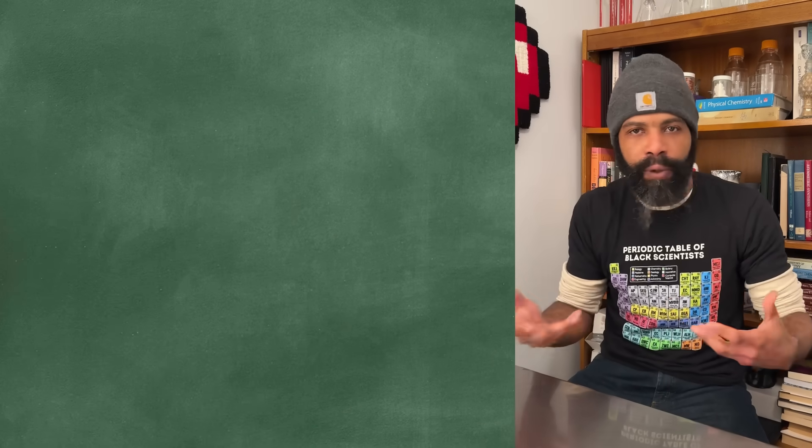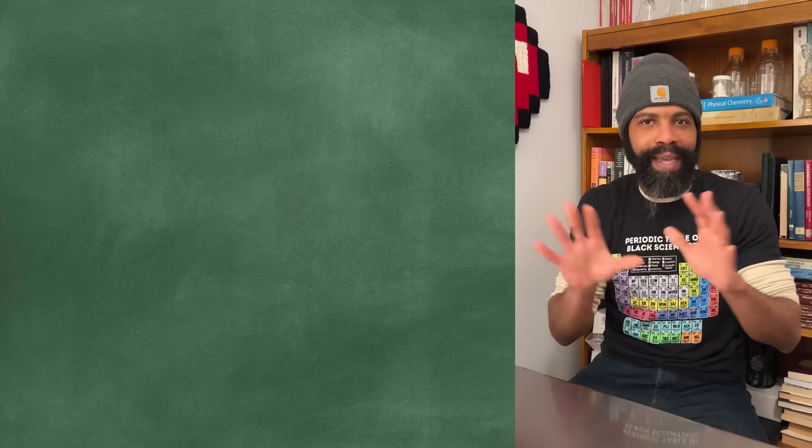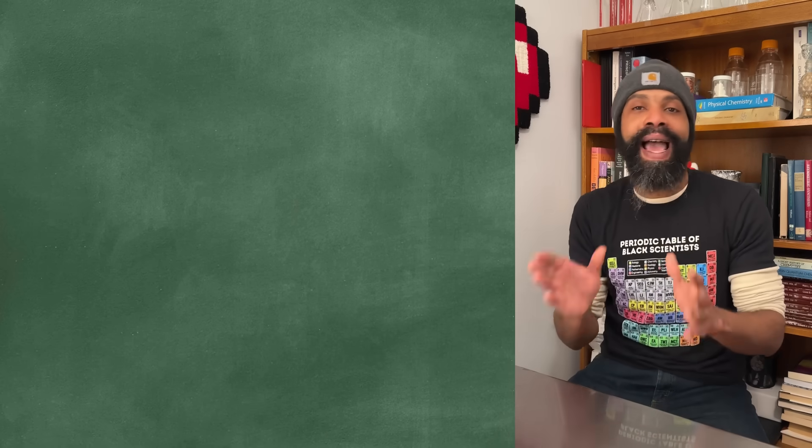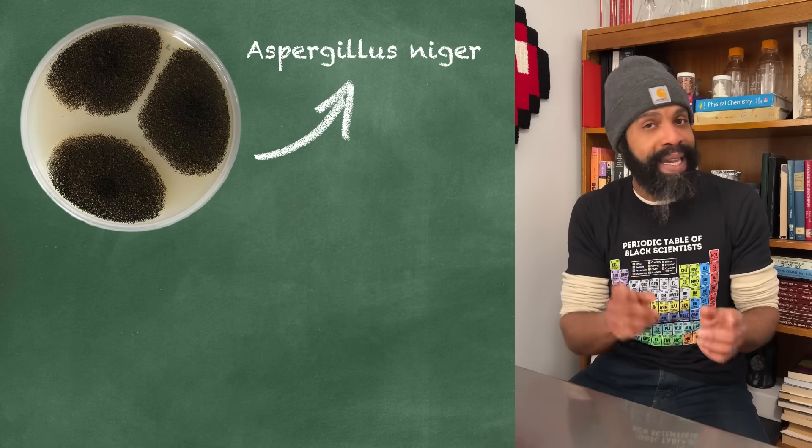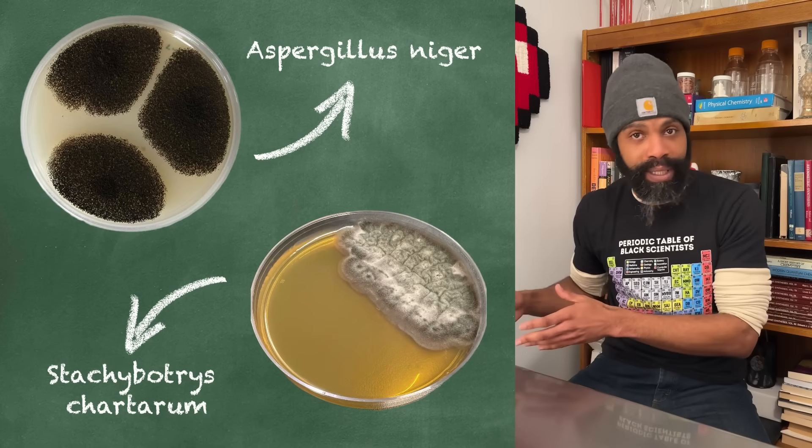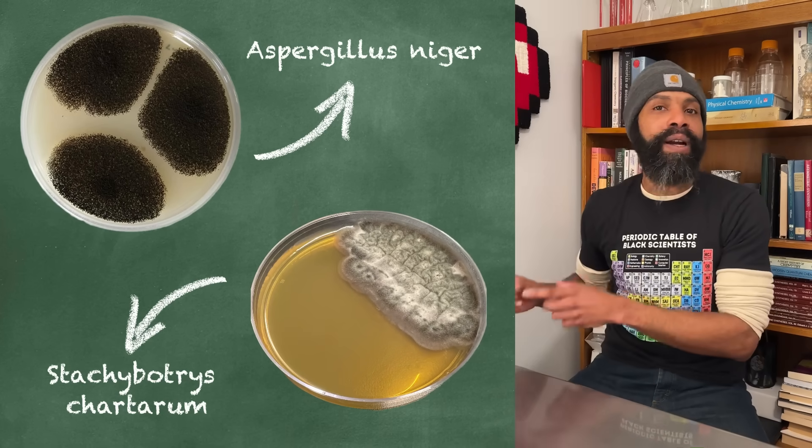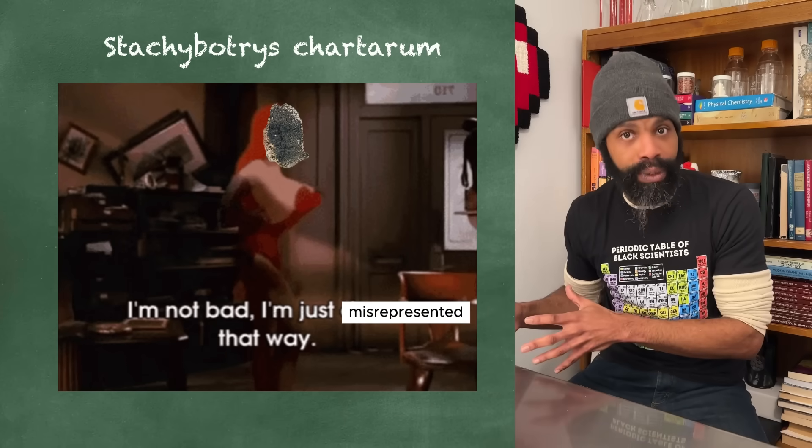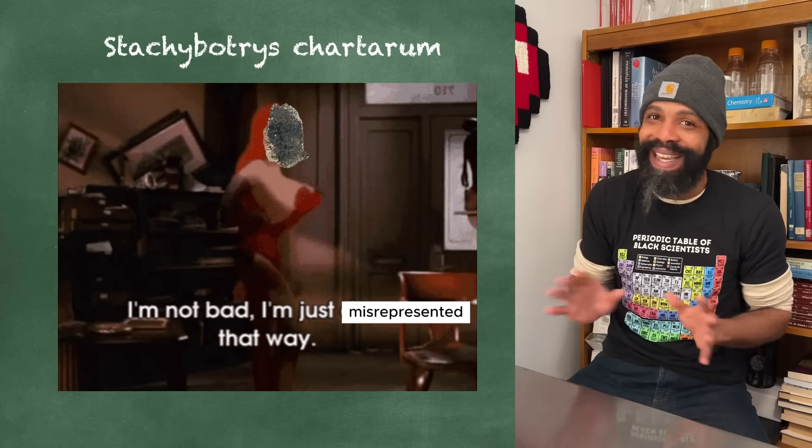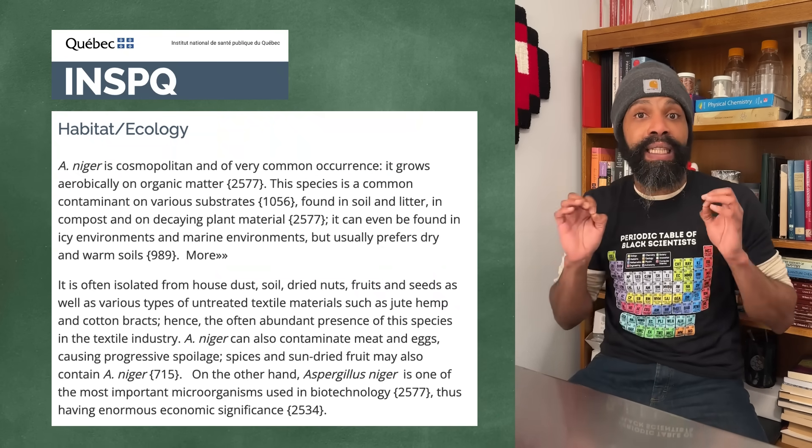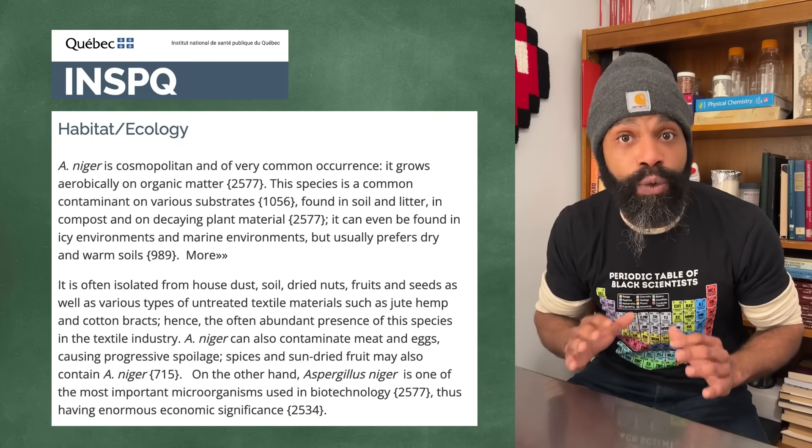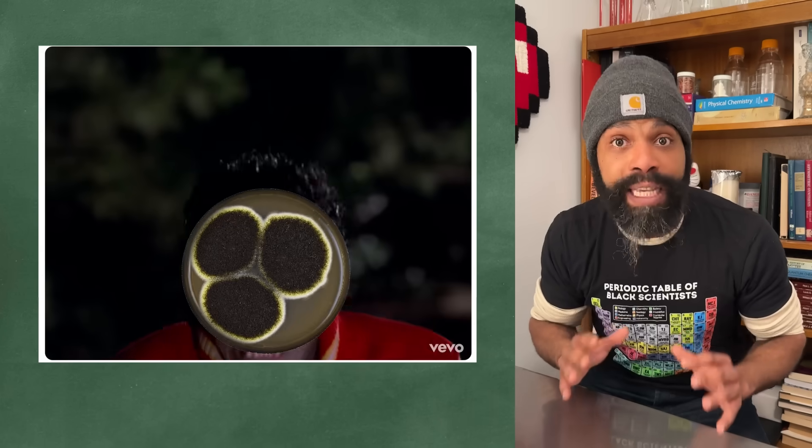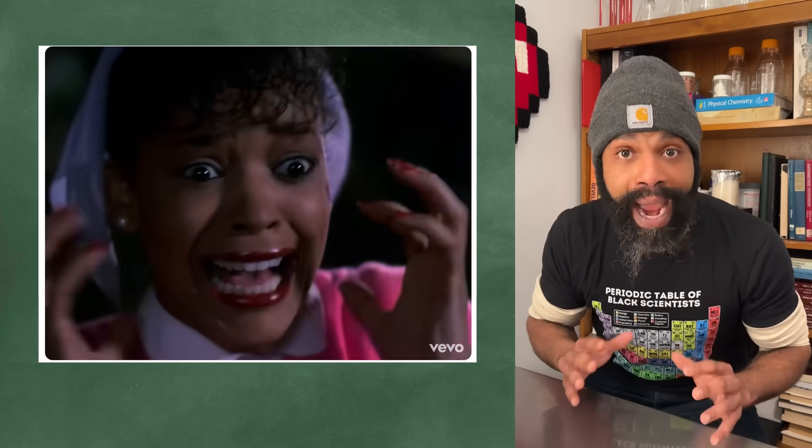The other important thing to understand is that Aspergillus niger, the fungus used to make citric acid, isn't the same as Stachybotrys, which is the commonly thought of bad black mold. And we don't use that one to make citric acid. But Aspergillus niger is one of those molds that's literally everywhere.